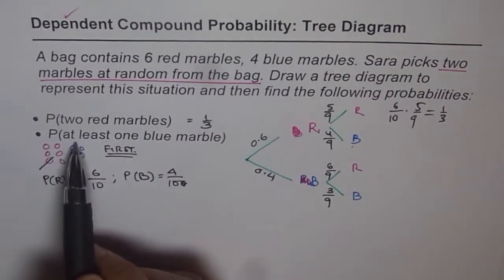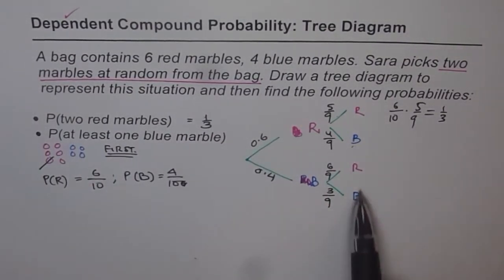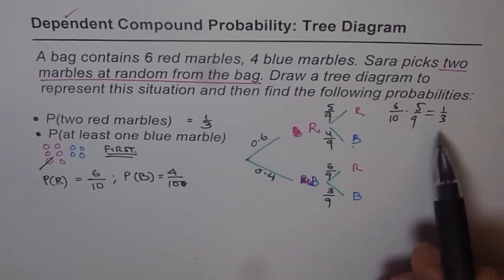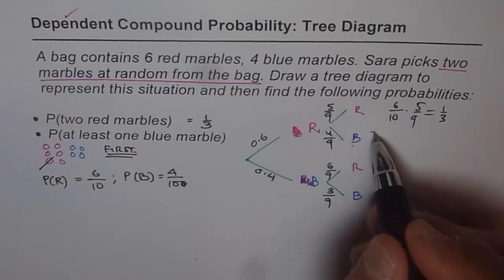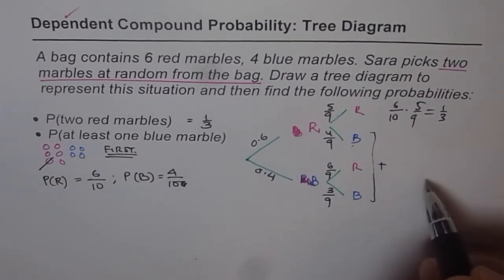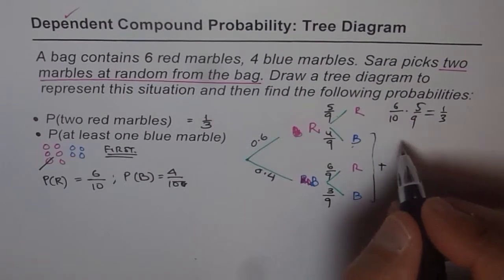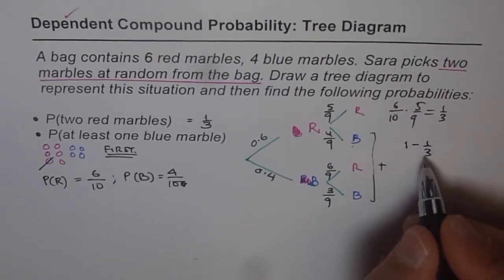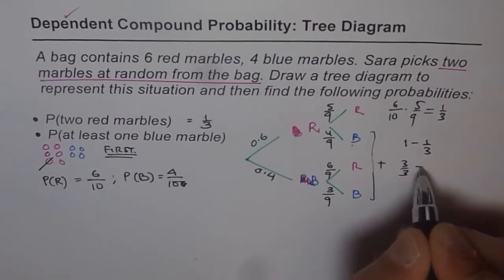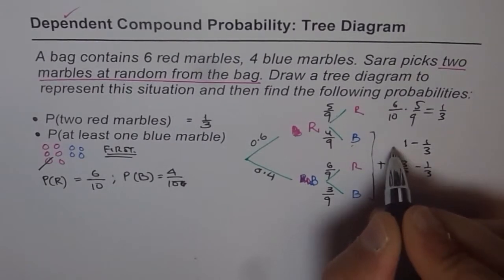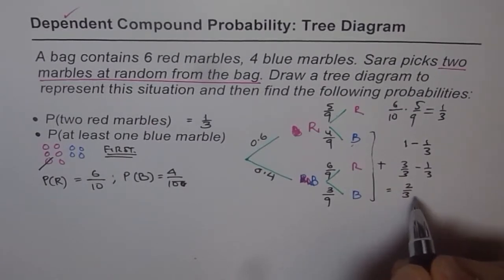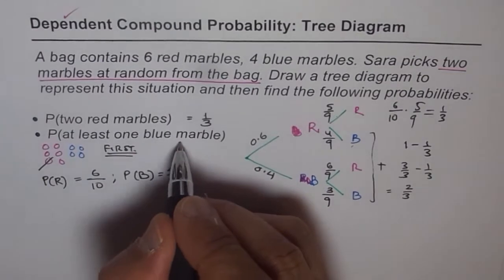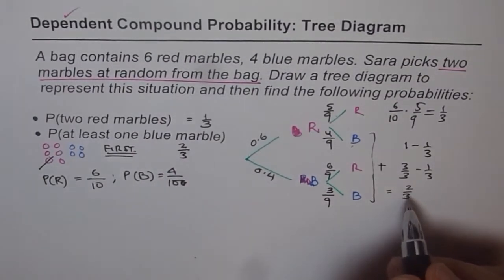What is the probability of getting at least 1 blue? At least 1 blue is 1 minus the probability of no blue, which is 1 minus 1 over 3. That gives 2 over 3. So the probability of getting at least 1 blue is 2 over 3.